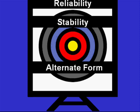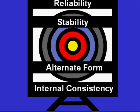The next one is called internal consistency. Here we only have the one assessment, but we're looking internally to see if the items themselves are consistent, and the score is reflective of that.